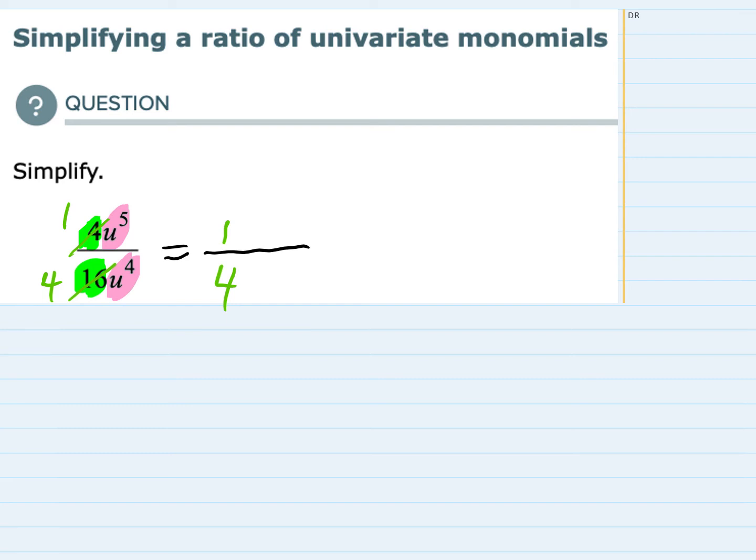I know that I can simplify this and write it with just 1u and that would be taking the power of the 1 in the top, the 5, and subtracting the power in the bottom which is a 4. That's the rule for division with exponents. You take the power of the top minus the power of the bottom.